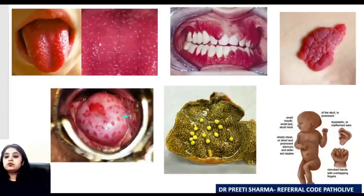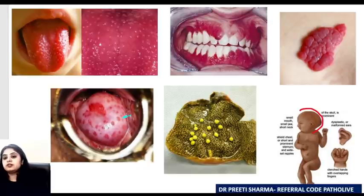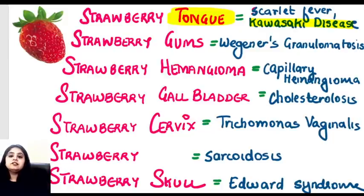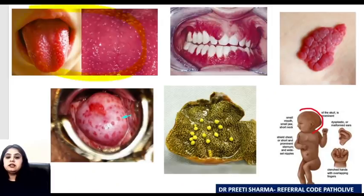Now let's move to strawberries — there are many strawberry appearances. Strawberry tongue is seen in two conditions: Kawasaki disease, a vasculitis in children under 5 years old, and scarlet fever. Strawberry gums are seen in Wegener's granulomatosis. Strawberry hemangioma is a capillary hemangioma seen in children less than 7 years of age — the appearance is just like a strawberry stuck on the skin. By age 7, it tends to fade away or diminish.